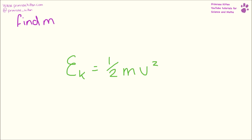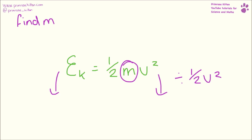Frequently you're going to be asked to find things that aren't kinetic energy, so you're going to need to rearrange the equations. To find m: because m is currently multiplied by half and v squared, we can take both of them over to the other side. We divide by half v squared, and what we end up with is EK over half v squared.